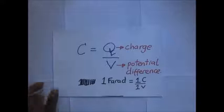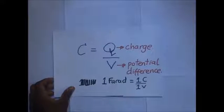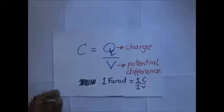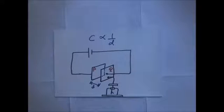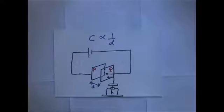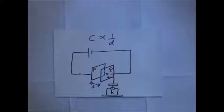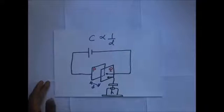We now look at the factors affecting capacitance of a capacitor. There are basically three factors: the first is the distance of separation between the plates, the second is the area of overlap, and the third is the permittivity of the dielectric.